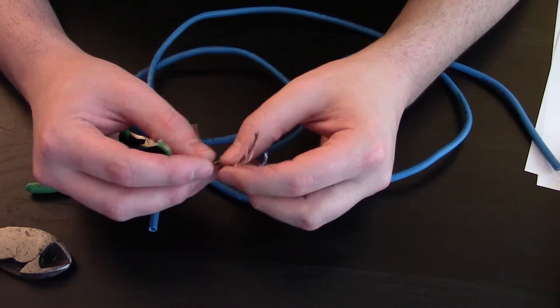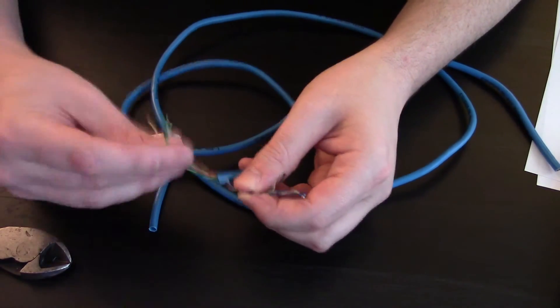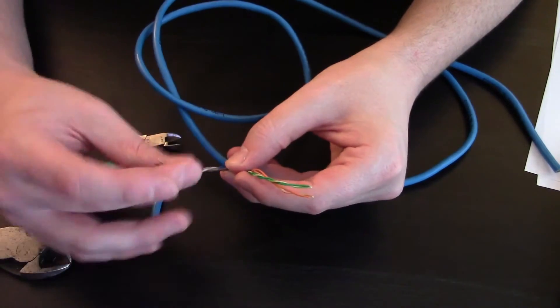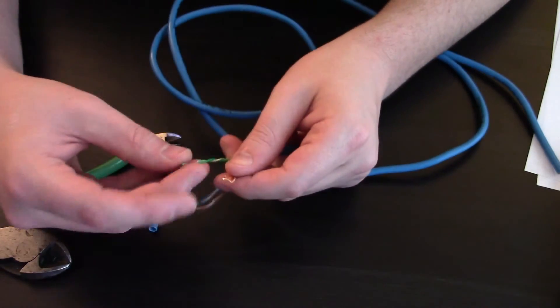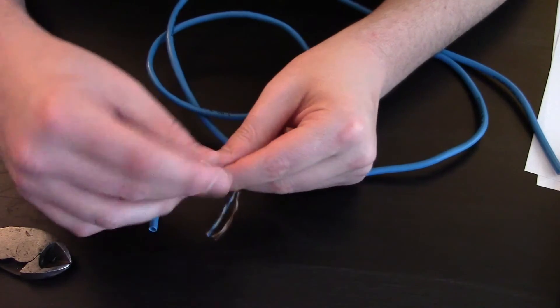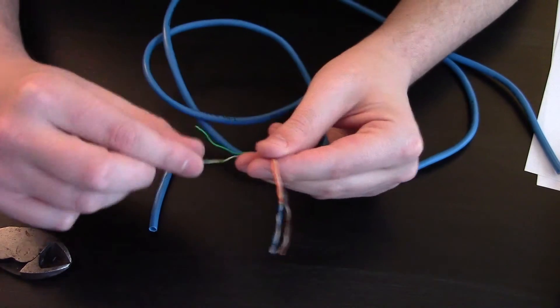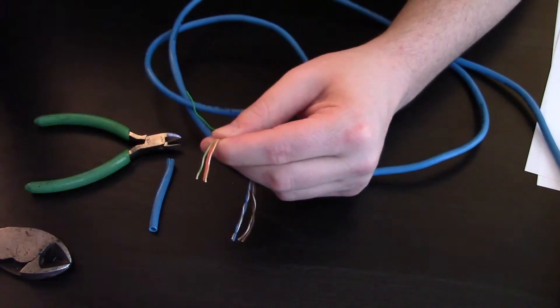So to separate it out obviously the orange cabling and the green cabling is going to be one cable and the blue and brown is going to be another one. So let's get this in order: we're going to do white orange, orange, white green, and green.